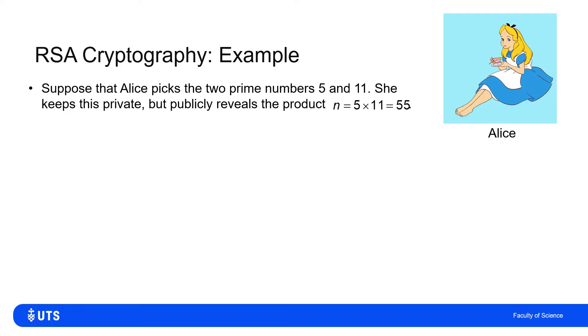We're going to do a simple numerical example here and it relies on Alice picking two prime numbers and she picks 5 and 11. What she then publicizes is the product of these, so she publicizes n equals 55.